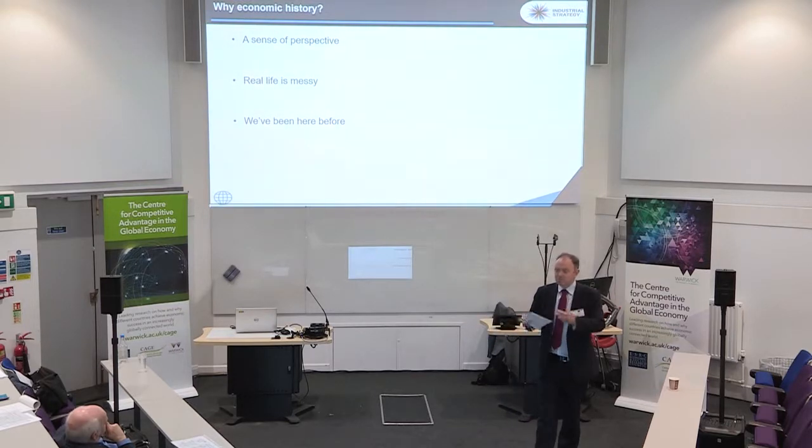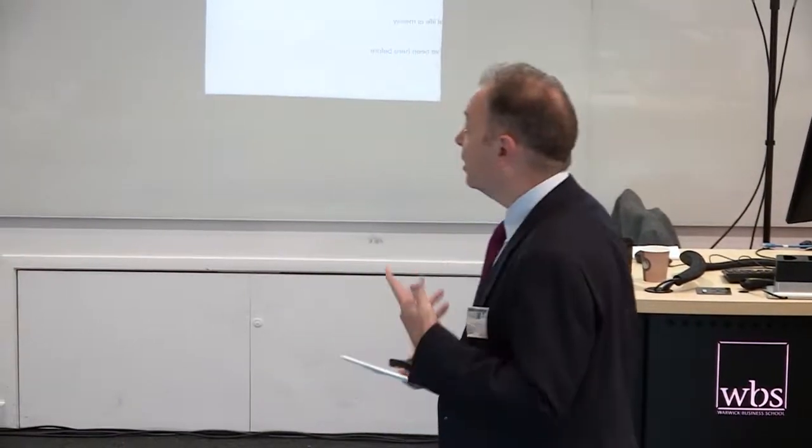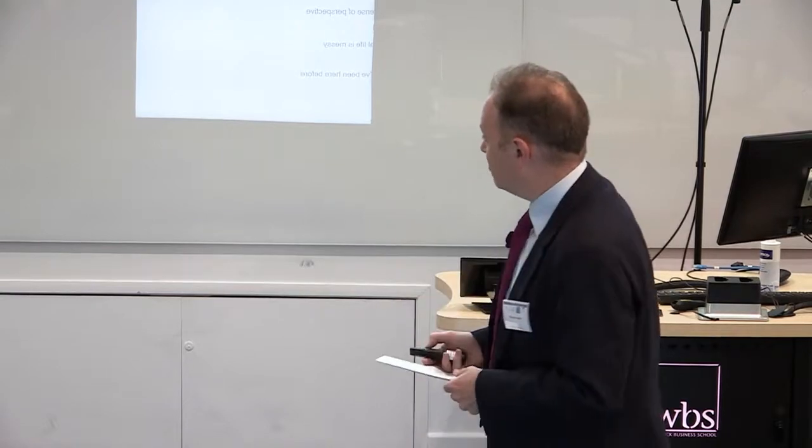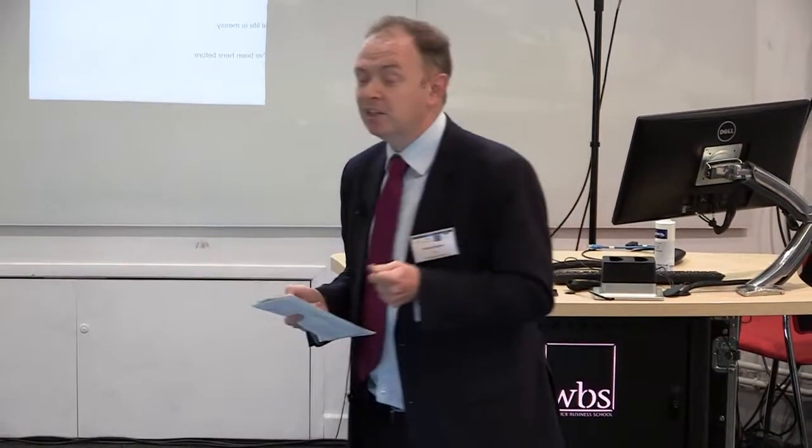Secondly, real life is messy. Anyone spending time in the archive knows that data sets are imperfect, you're dealing with boundedly rational individuals, things don't seem to make sense — and that's actually a pretty good description of life in government. History doesn't repeat itself but it rhymes. It also helps when dealing with very young Treasury officials who say 'it's just the 1970s again' — but which part? The workers' cooperative at Meriden motorcycles, or the MinTech investments in Cambridge that helped form the Cambridge cluster, or the nationalisation of Rolls-Royce that safeguarded a crown jewel of our industrial base?